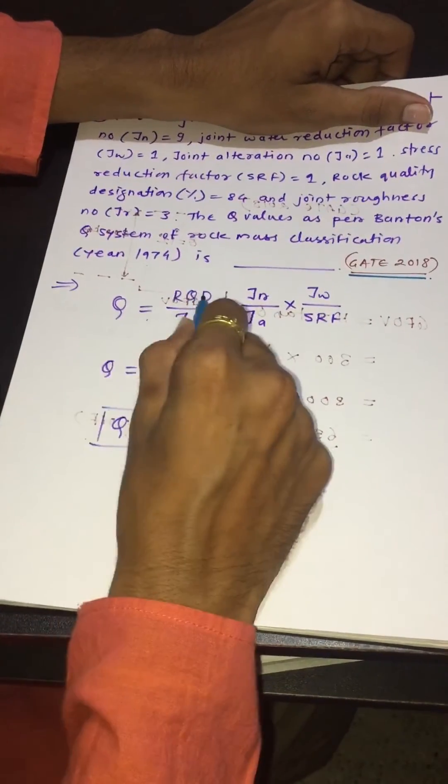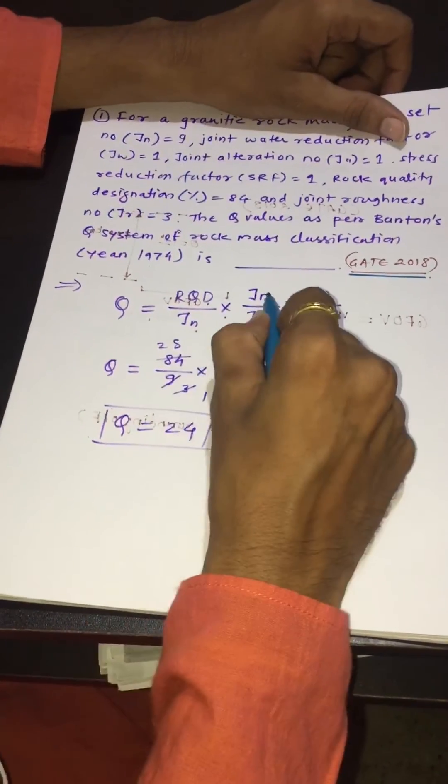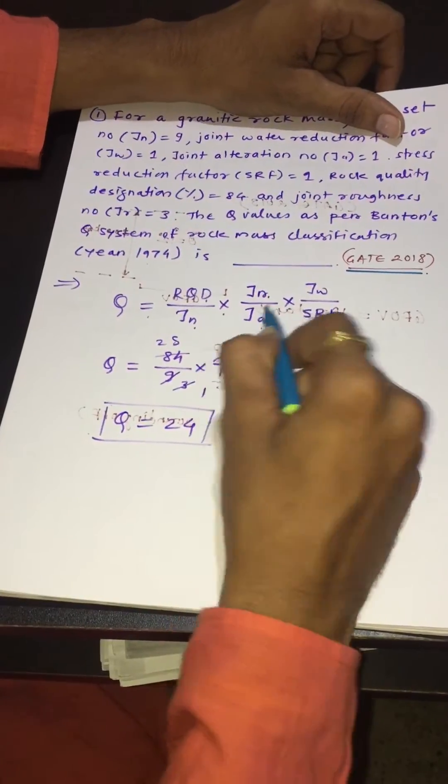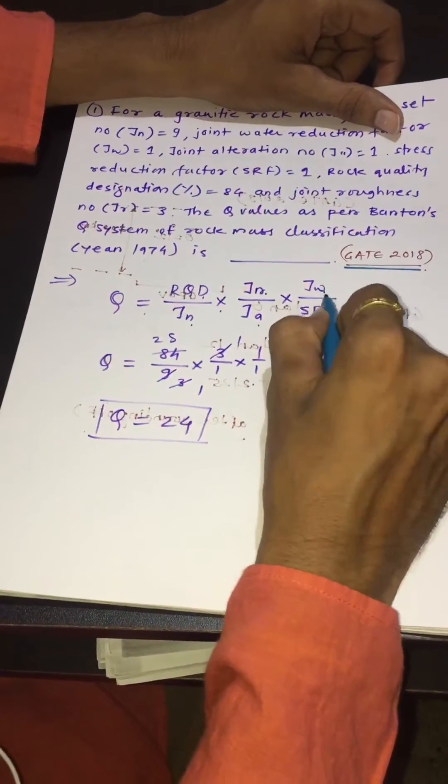Q is equal to RQD divided by Jn multiplied by Jr divided by Ja multiplied by Jw divided by SRF.